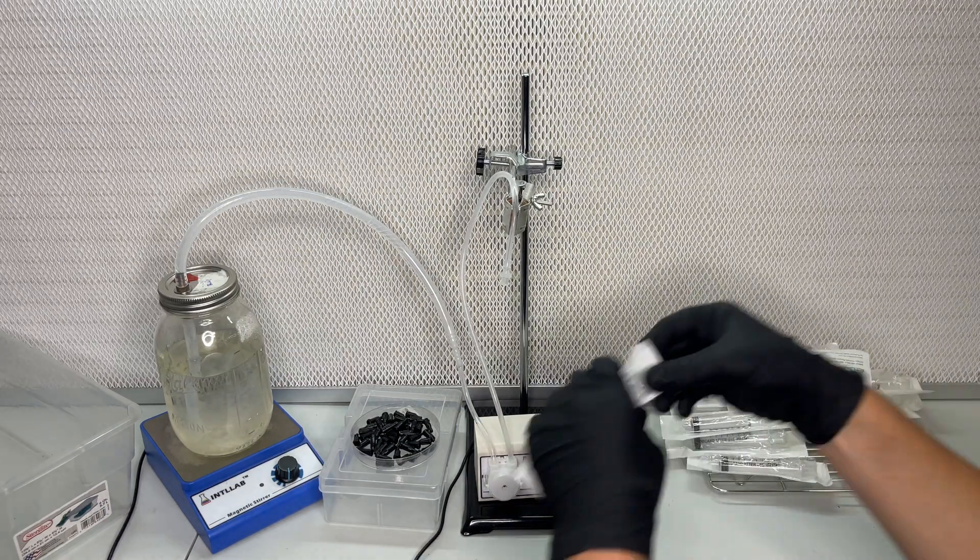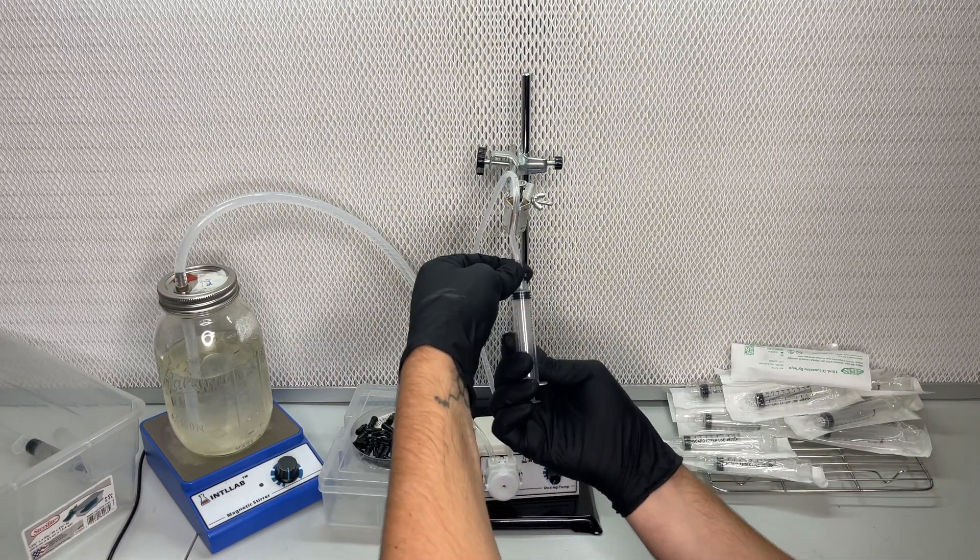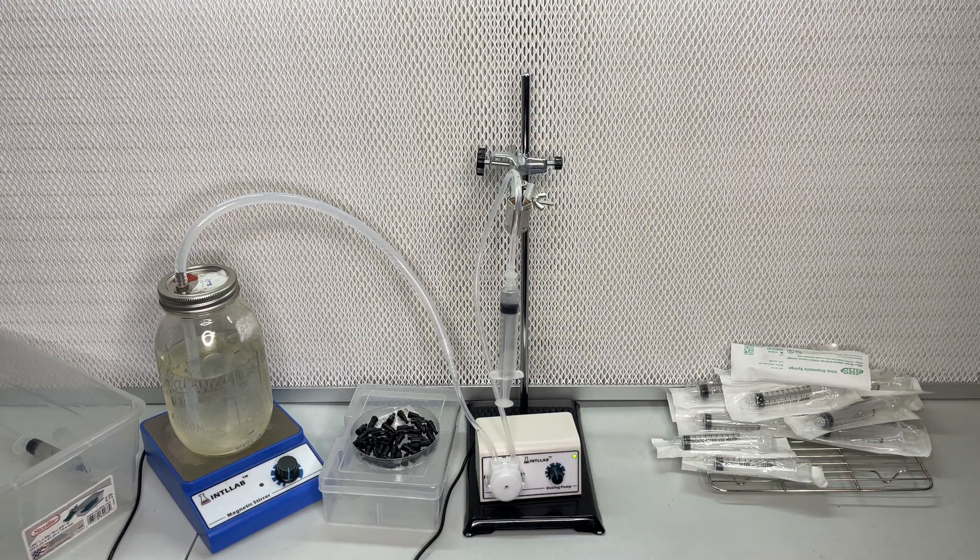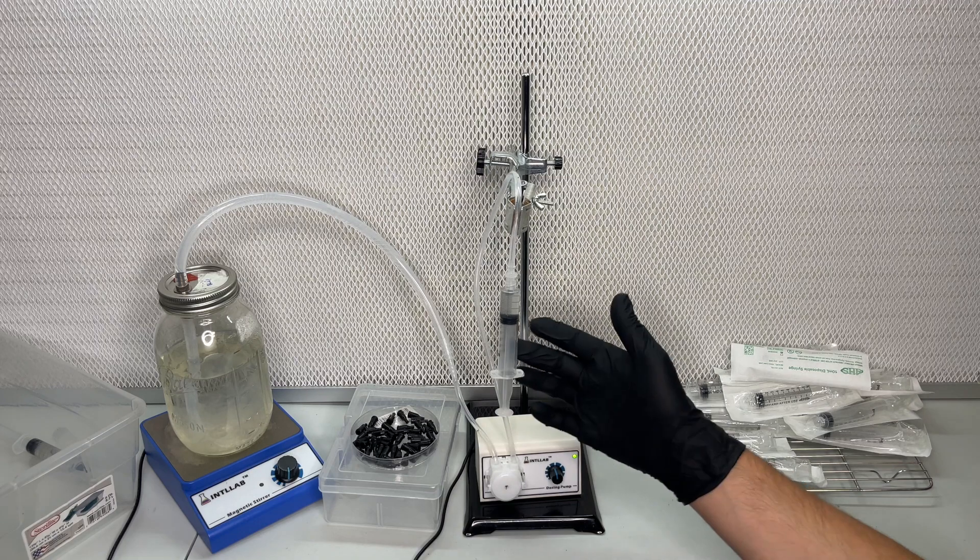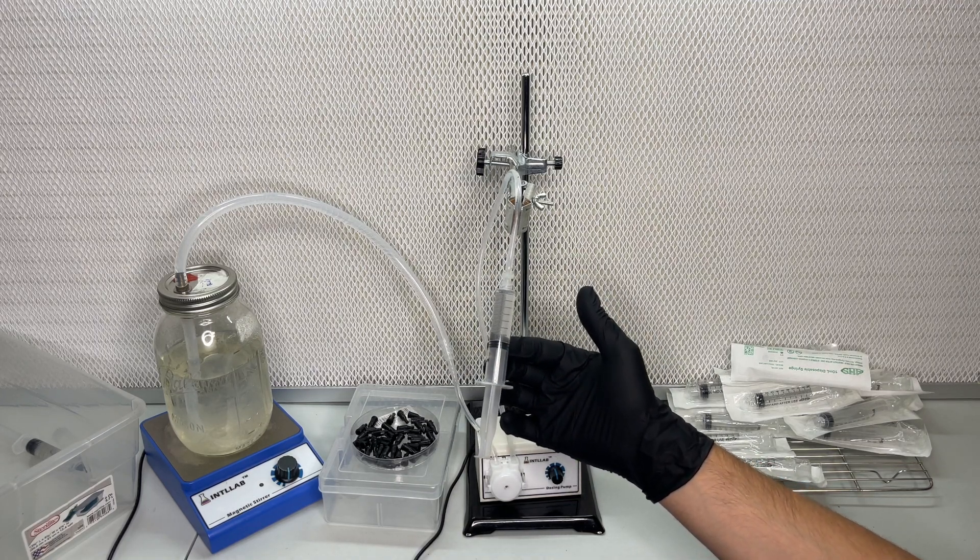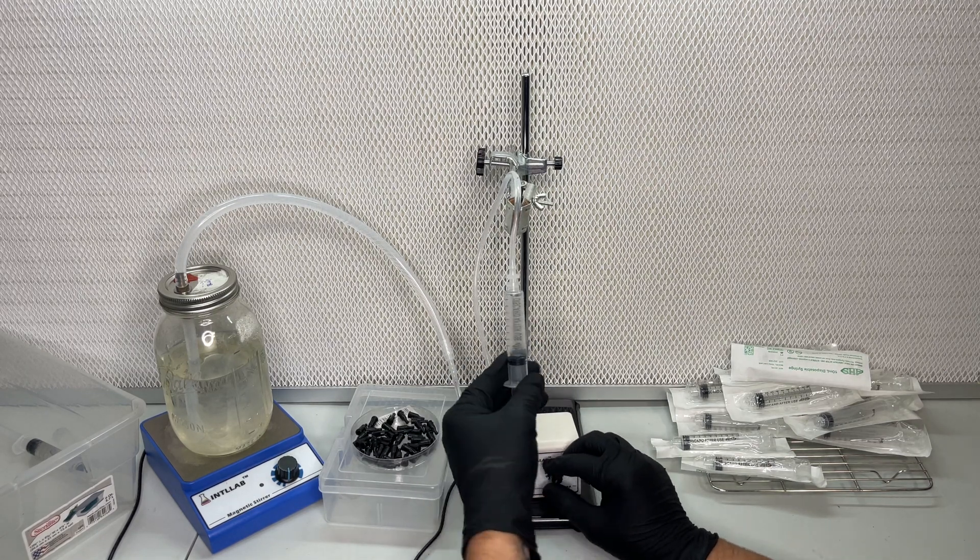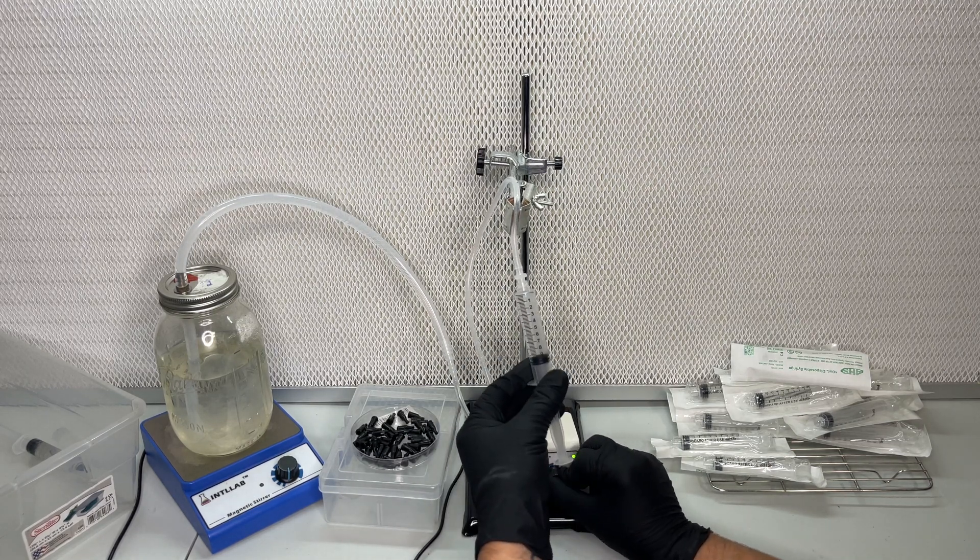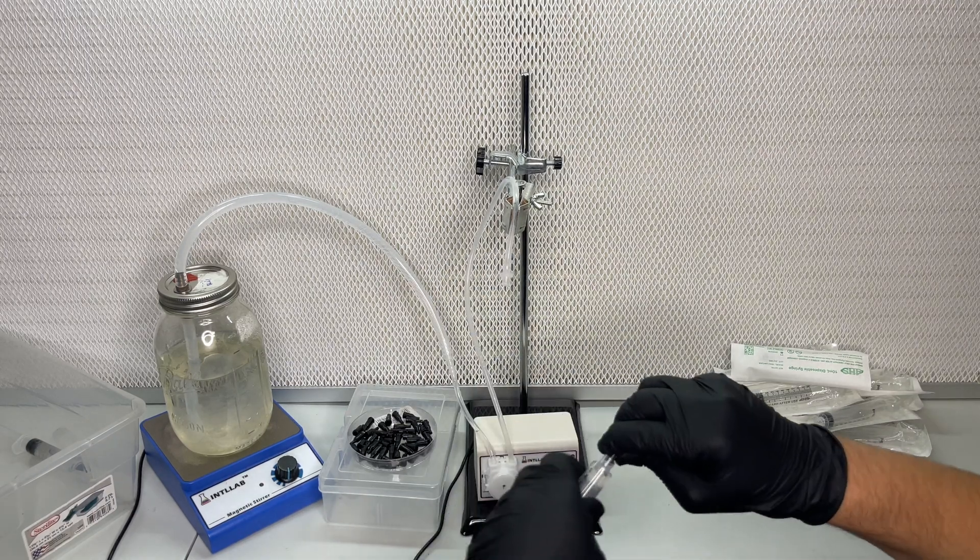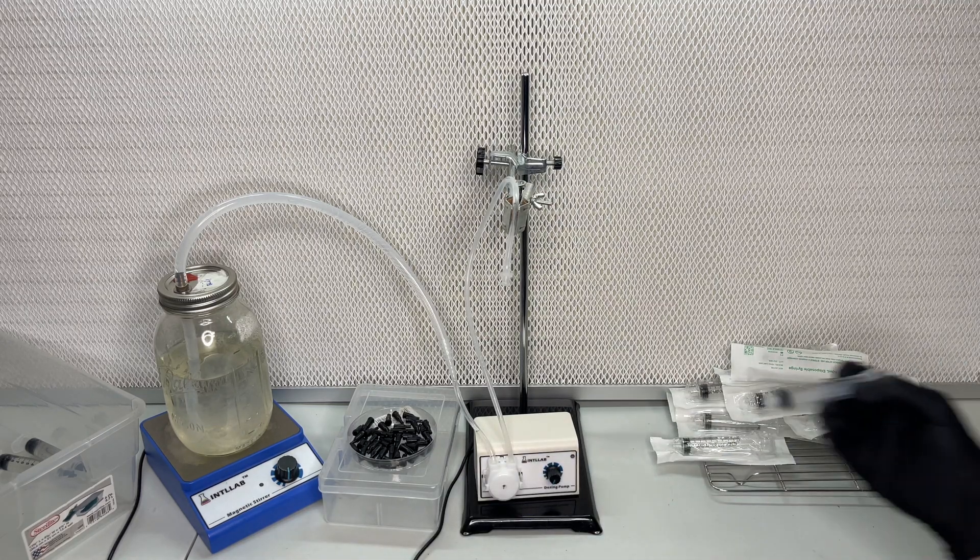Once everything is connected I turn on the peristaltic pump and purge the system into an empty jar until the liquid has reached the exit. I attach a sterile syringe and turn on the pump and it automatically fills the syringe within a few seconds. If you make a lot of syringes you know it can hurt your hand a lot, so using this method really gets rid of that problem.